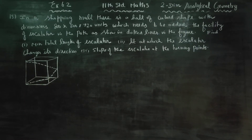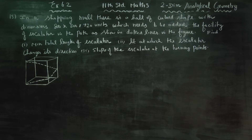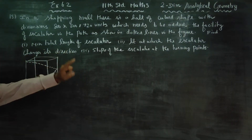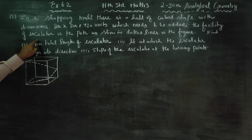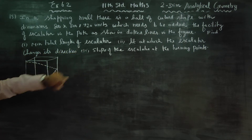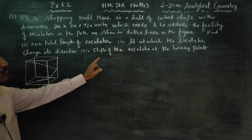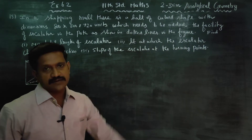Dear 11th standard students, in Exercise 6.2, Problem 15 — the last problem of the exercise — in a shopping mall there is a hall of cuboid shape with dimensions 800×800×720 units, which needs the facility of an escalator in the path as shown in the diagram. Find: the total length of the escalator, the height at which the escalator changes its direction, and the slope of the escalator at the turning points.